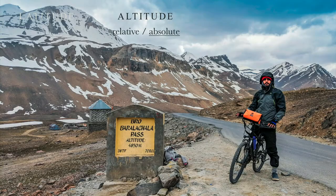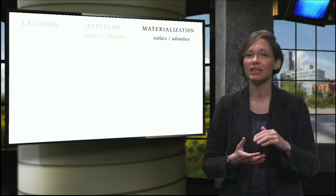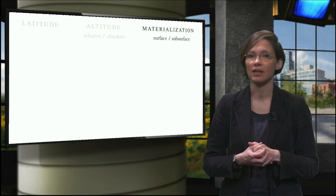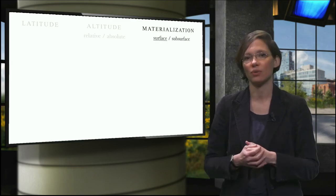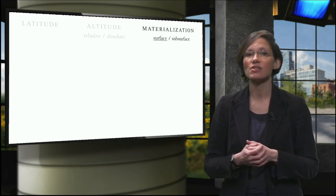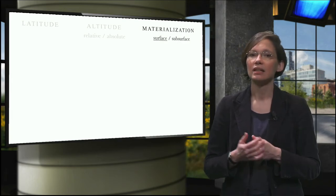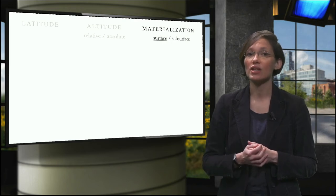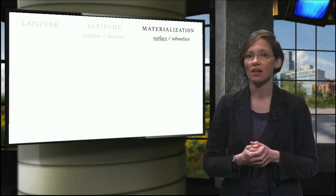Secondly, there is an absolute altitude, which is the number of meters you are located above — or maybe even below — general mean sea level. From latitude and altitude, we can go down to the materialization of your location, starting with the surface. What is your direct environment covered with? Is the land mostly paved and the soil closed off, or is there plenty of open ground? The land cover is often related to land use, which strongly influences the permeability of the surface.